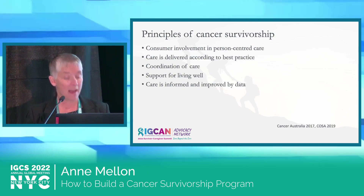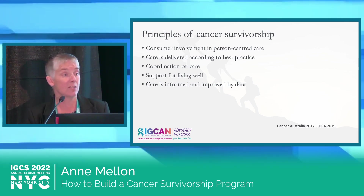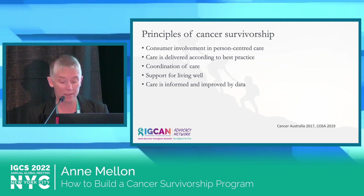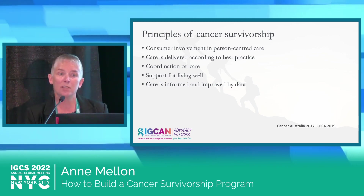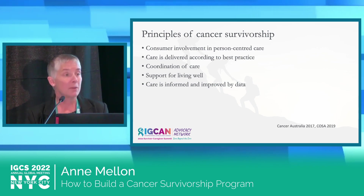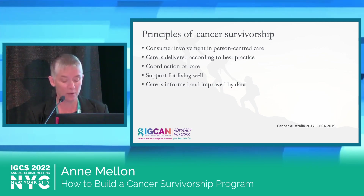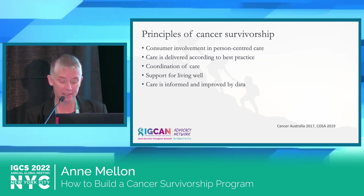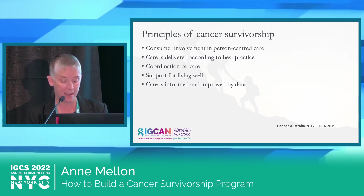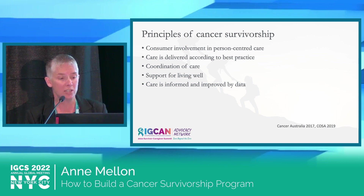Cancer Australia have outlined five principles that we should include when trying to start a cancer survivorship program, and they can help to guide the policy, planning, and health system responses to cancer survivorship. The first is that there should be consumer involvement and person-centred care — people affected by cancer should be enabled to be involved in shared decision-making and supported to self-manage according to their own preferences. The second is that care should be delivered according to best practice: consistent, safe and high-quality evidence-based cancer care according to individual circumstances and needs — not a one-size-fits-all, but individualised to each patient.